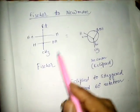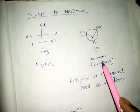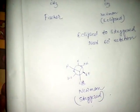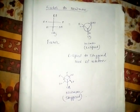So from Fischer we get Newman ellipse, and then Newman staggered. Thank you.